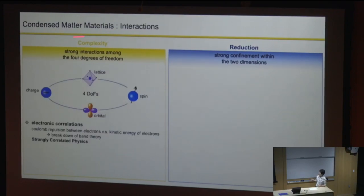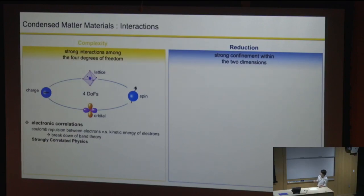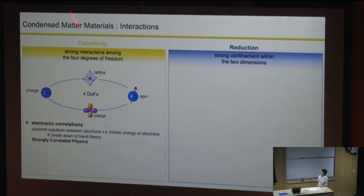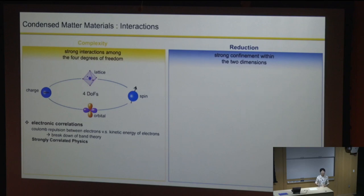In the first family—the complexity of interactions—we typically care about four different degrees of freedom. Crystals are made of atoms arranged in a periodical structure, so the crystal lattice gives us one degree of freedom. Electrons in the outer shells of those atoms give three more: charge, orbital, and spin. In most cases, it's the interaction of these four different degrees of freedom in a solid-state material that makes it interesting.